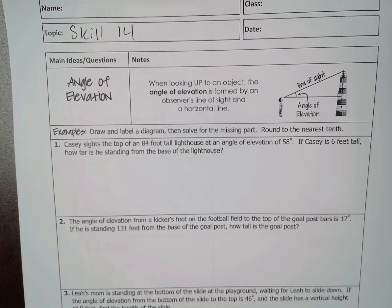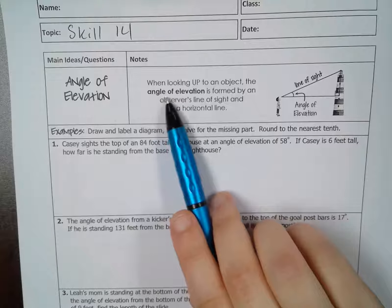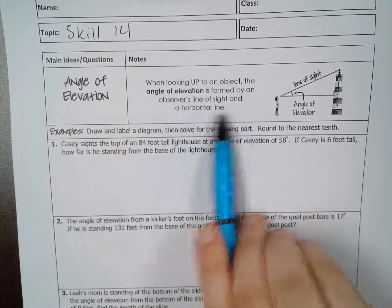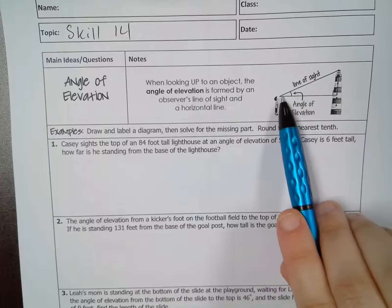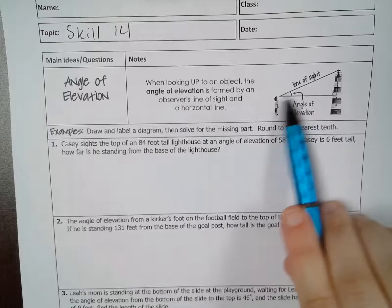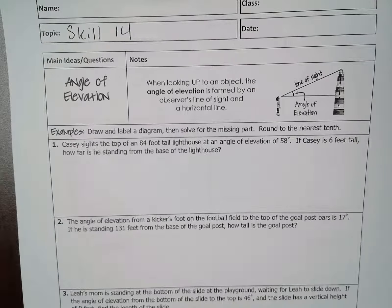Today we're going to be learning skill 14 of module 8. We're going to be talking about angles of elevation and angles of depression. When looking up to an object, the angle of elevation is formed by an observer's line of sight and a horizontal line. So the angle of elevation, if you're on the ground, is the angle that you form with the ground. We're going to do four examples of angle of elevation.